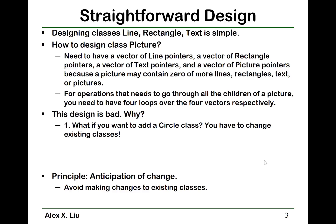Dealing with a line, rectangle, or text is simple, because they don't contain other stuff. But how to design this picture class? Because this picture class may contain zero or more lines, zero or more rectangles, zero or more text, and so on. The straightforward way to design this is to have a vector of line pointers, a vector of rectangle pointers, a vector of text pointers, and a vector of picture pointers. If a picture contains three lines, we insert those three line objects into the line vector. If there are no lines, then this vector is empty.